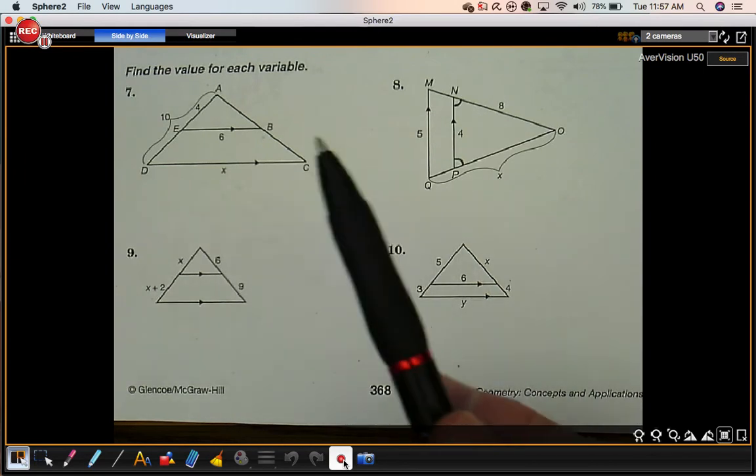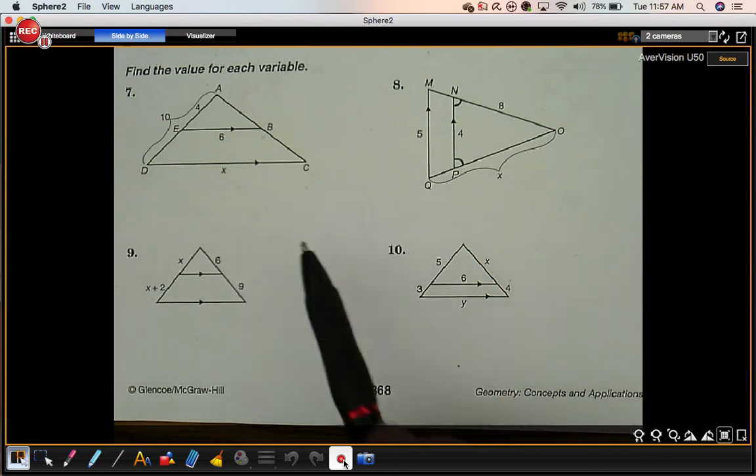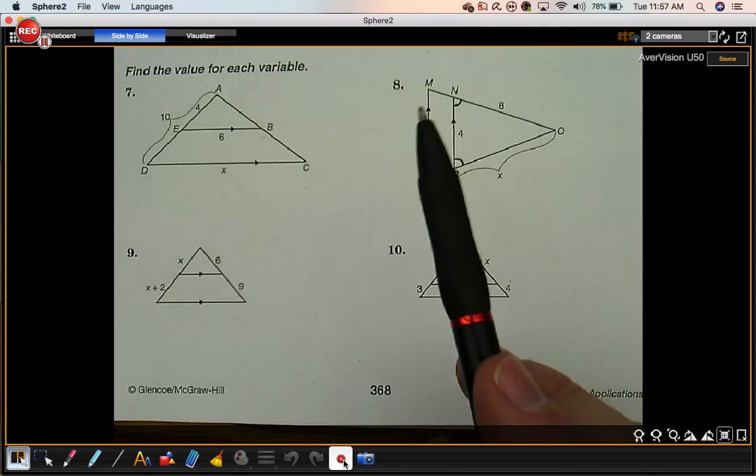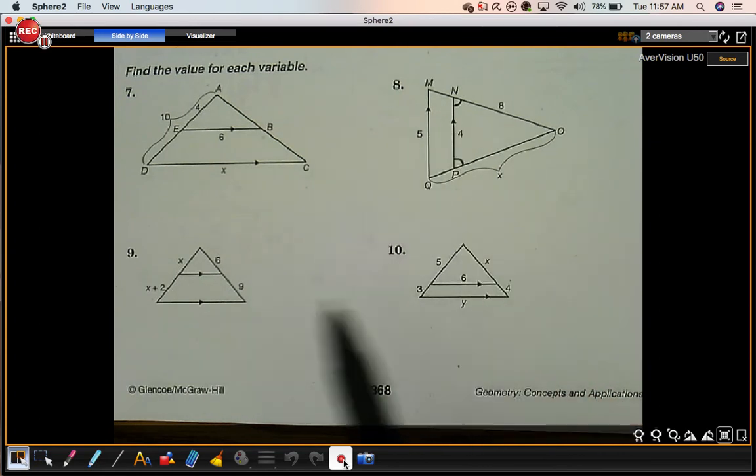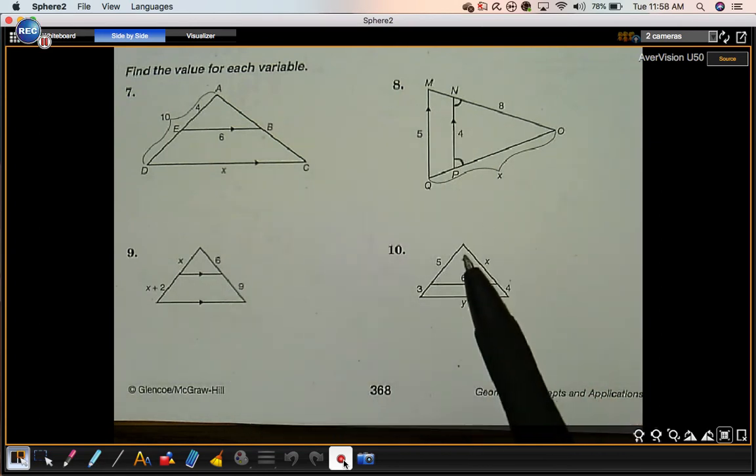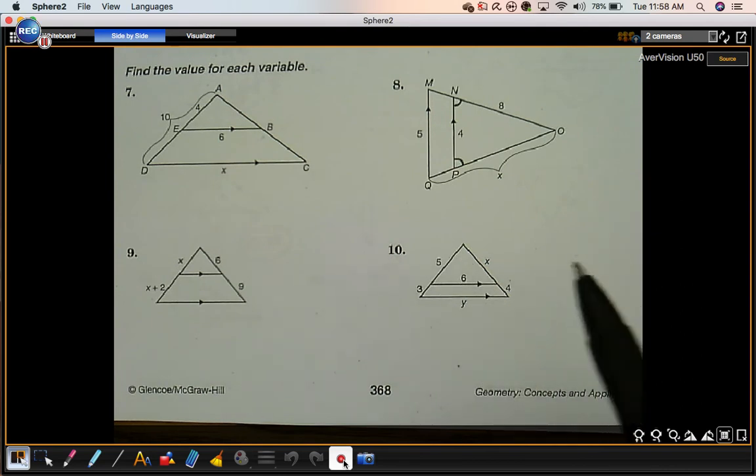Okay, 7 through 10. We're looking to find the value for each variable. These triangles are similar because one is inside the other and you have the parallel marks. So we know they're similar to start with. If you didn't know that, you wouldn't be able to do this.